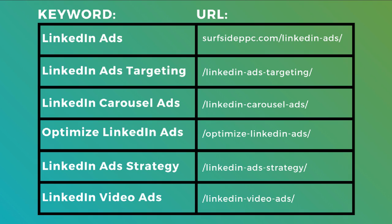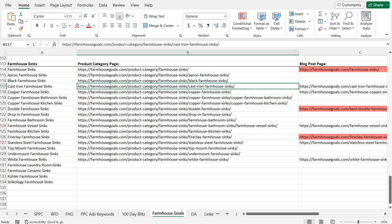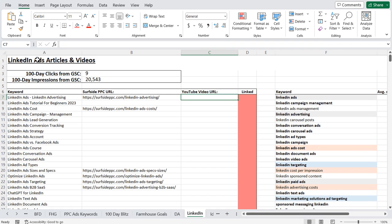Coming over to my next slide, this is the basic look of a keyword map. I'm targeting the keyword LinkedIn ads. Here is the URL on my Surfside PPC blog for LinkedIn ads. I'm targeting LinkedIn ads targeting and basically every variation — LinkedIn ads targeting options, LinkedIn ads job post targeting, LinkedIn ads degree targeting, LinkedIn ads education targeting. Instead of having one page that targets everything, I can segment all these different keywords into different blog posts and then within my main page link to all these different pages. Let me open up the keyword map I have for my LinkedIn ads articles and videos.